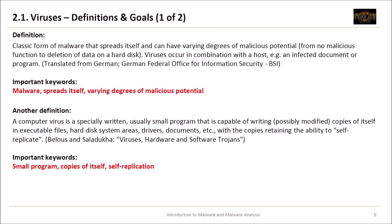Now let's see a few definitions of viruses. From the BSI: a virus is a classic form of malware that spreads itself and can have varying degrees of malicious potential — from no malicious function to deletion of data on a hard disk. Viruses occur in combination with a host, for example an affected document or a program. The important keywords are: viruses are malware, a virus spreads itself, and a virus has varying degrees of malicious potential.